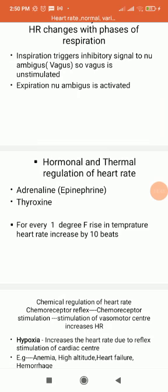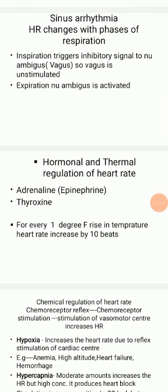Now we will see the hormonal and thermal regulation of heart rate. Adrenaline or epinephrine increases the heart rate by directly stimulating the SA node. Thyroxine increases the heart rate indirectly by increasing the basal metabolic rate, increasing oxygen requirements, which secondarily increases heart rate. Regarding temperature, for every 1 degree Fahrenheit rise in temperature, the heart rate increases by 10 beats.